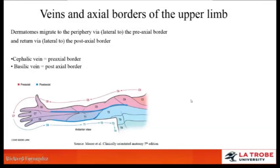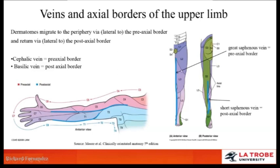In the fully developed adult, we can see the topographic arrangement of dermatomes. As we move down the spinal cord from C4, C5, C6, and so forth, each spinal segment supplying skin — a dermatome — is migrating along the limb. In the upper limb, dermatomes migrate along the pre-axial border represented by the cephalic vein, and return to the trunk along the post-axial border indicated by the basilic vein. Similarly in the lower limb, from L1, L2, L3, dermatomes migrate distally along the pre-axial border — the great saphenous vein — and return via the post-axial border.